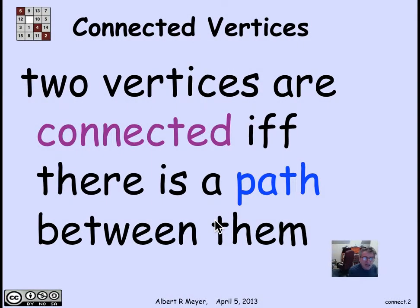Two vertices in a simple graph, or for that matter, a directed graph, are said to be connected if and only if there's a path between them.